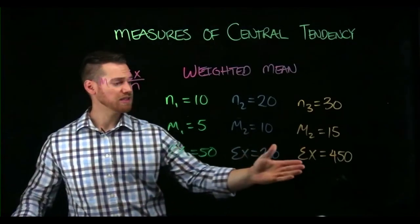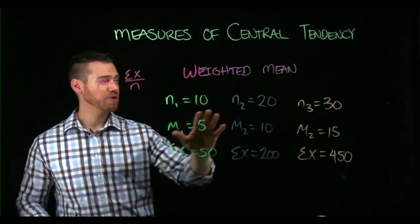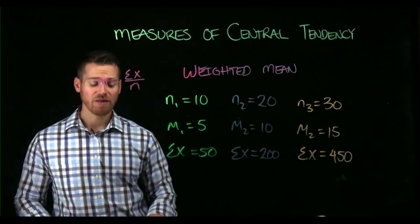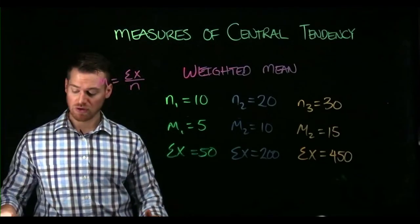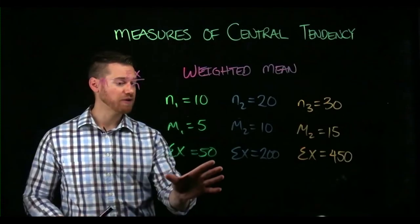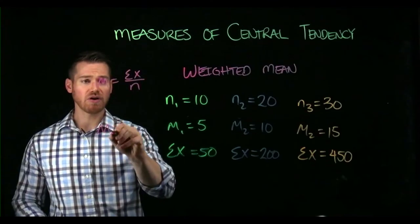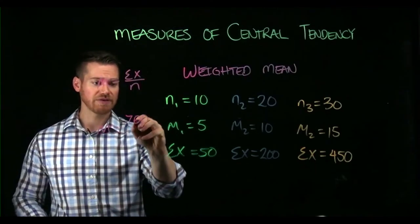Now we can put all of these together and then put all the sample sizes together. And from that we can obtain the weighted mean. So let's do that. If we sum together these values, we get 700. So the sum of all of the samples is 700.